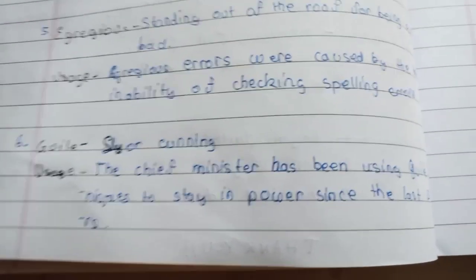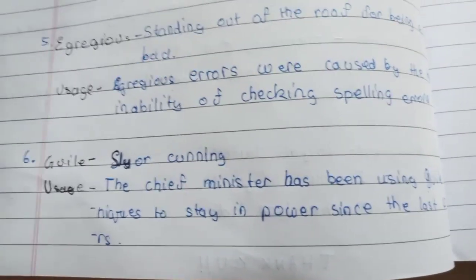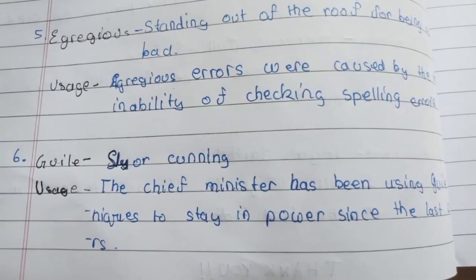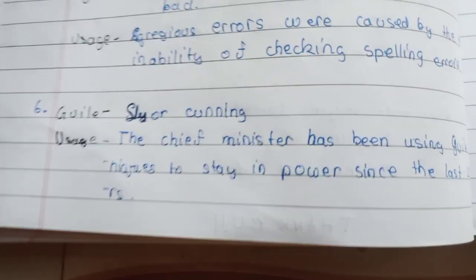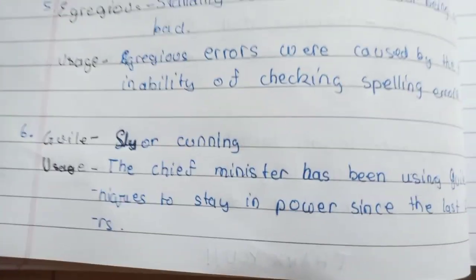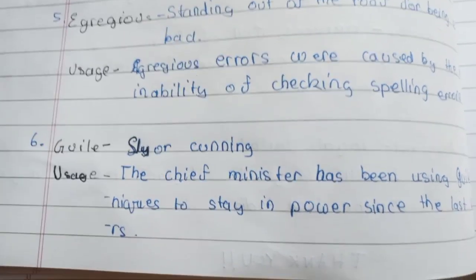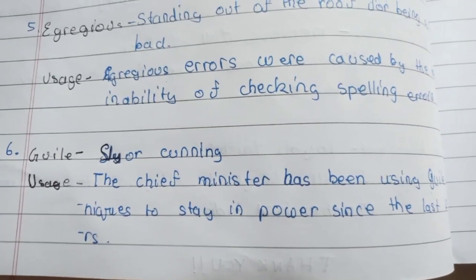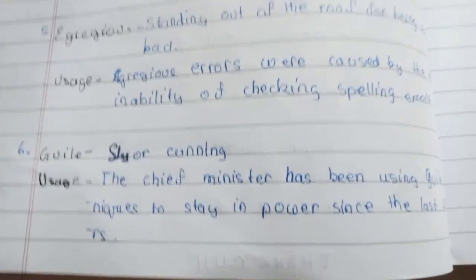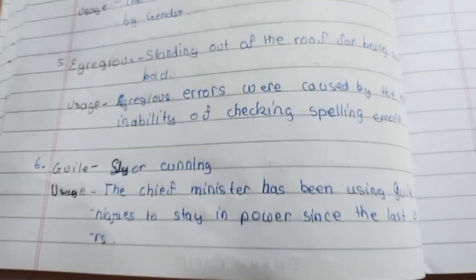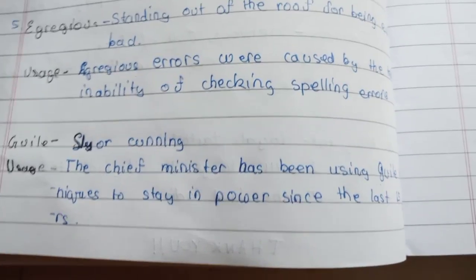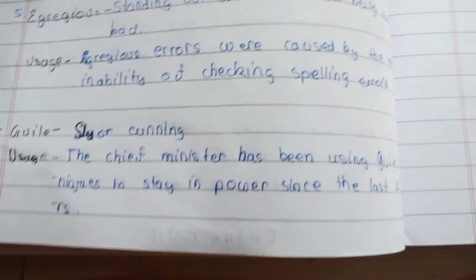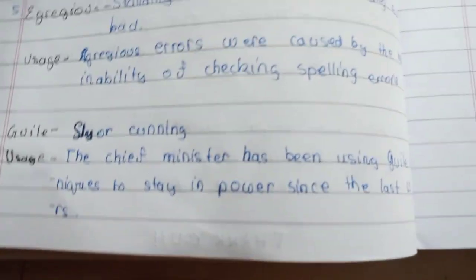Guile means sly or cunning, and it is not a positive word. For a positive alternative, you can use 'intelligent' or search for synonyms online. Usage: 'The chief minister has been using guile techniques to stay in power for the last 15 years.'